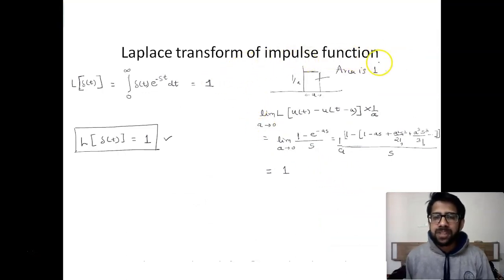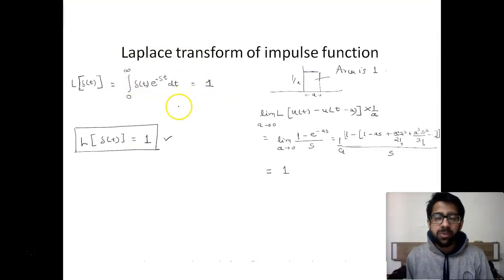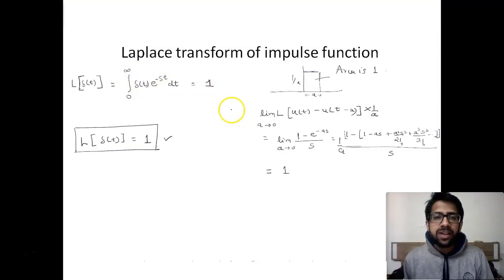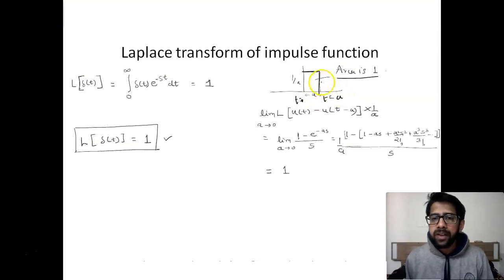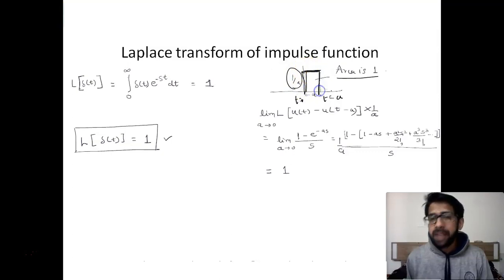Now let us find the Laplace transform of the impulse function using the definition: the Laplace transform is the integration from 0 to infinity of delta(t) times e raised to minus st dt, which equals 1. To understand this, let us assume a square pulse starting at t equal to zero and ending at t equal to a. For this pulse with area 1, the height should be 1 upon a. This pulse can be written mathematically as u(t) minus u(t minus a).